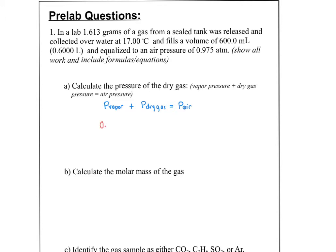So: vapor pressure (0.0191 ATM) plus the pressure of the dry gas equals the air pressure. The air pressure given in the problem was 0.975 ATM. Subtracting the vapor pressure from both sides — 0.975 minus 0.0191 — gives a dry gas pressure of 0.956 ATM.